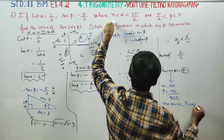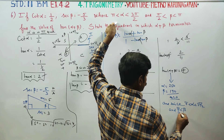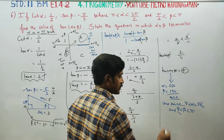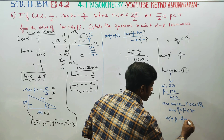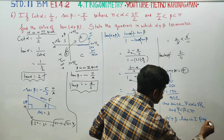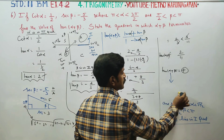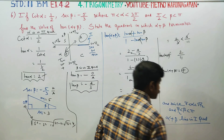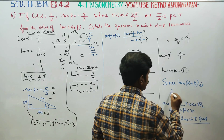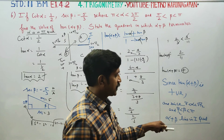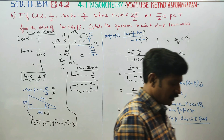Since alpha is between π and 3π by 2, and beta is between π by 2 and π, alpha plus beta lies in a specific quadrant. Since alpha plus beta lies in the first quadrant, tan(α + β) is positive, confirming our answer of 2 by 11.